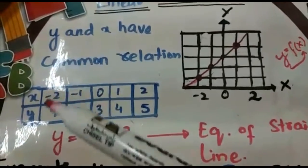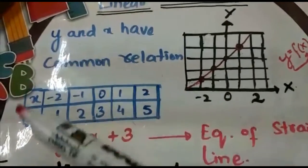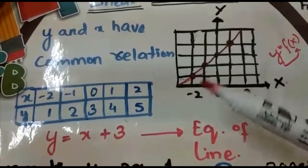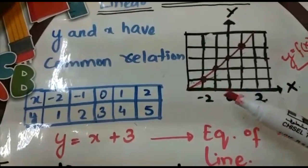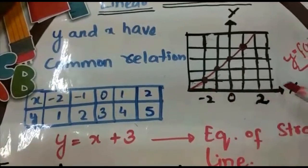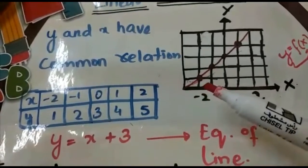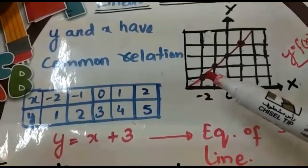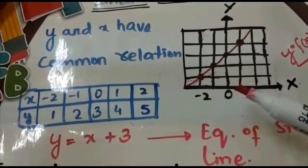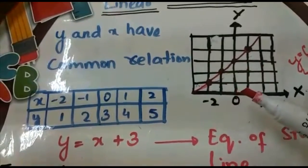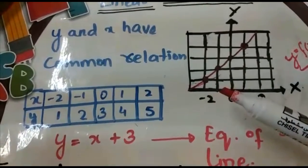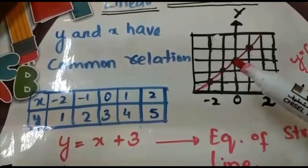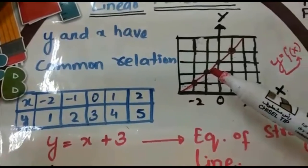Now look at the table of x and y values. We are going to build the relationship between x and y. Look at x = -2: moving to minus two on the horizontal axis and one box up, we get y = 1. Then at x = -1, moving to minus one and two boxes up, we get y = 2.